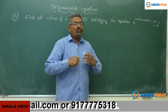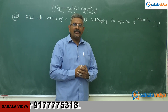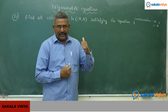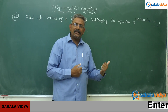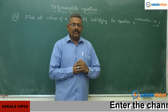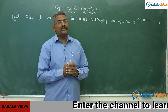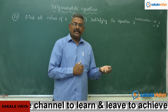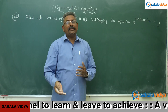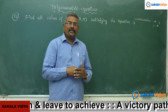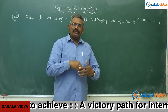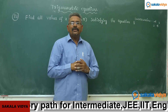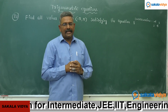The formula to find the sum to infinity of a geometric progression is a divided by 1 minus r, where a is the first term and r is the common ratio. The common ratio is evaluated as the second term divided by the first term, or equivalently any succeeding term divided by its preceding term — that constant value is the common ratio.